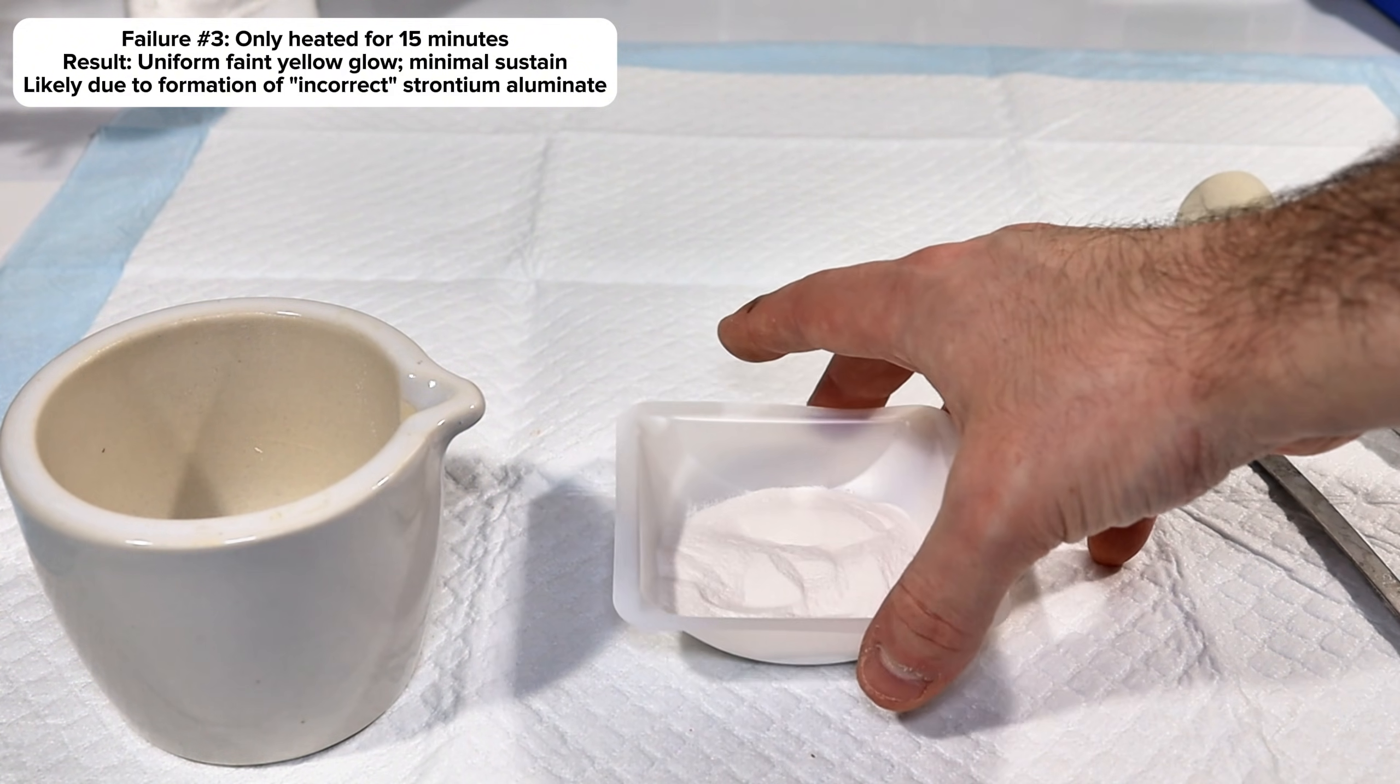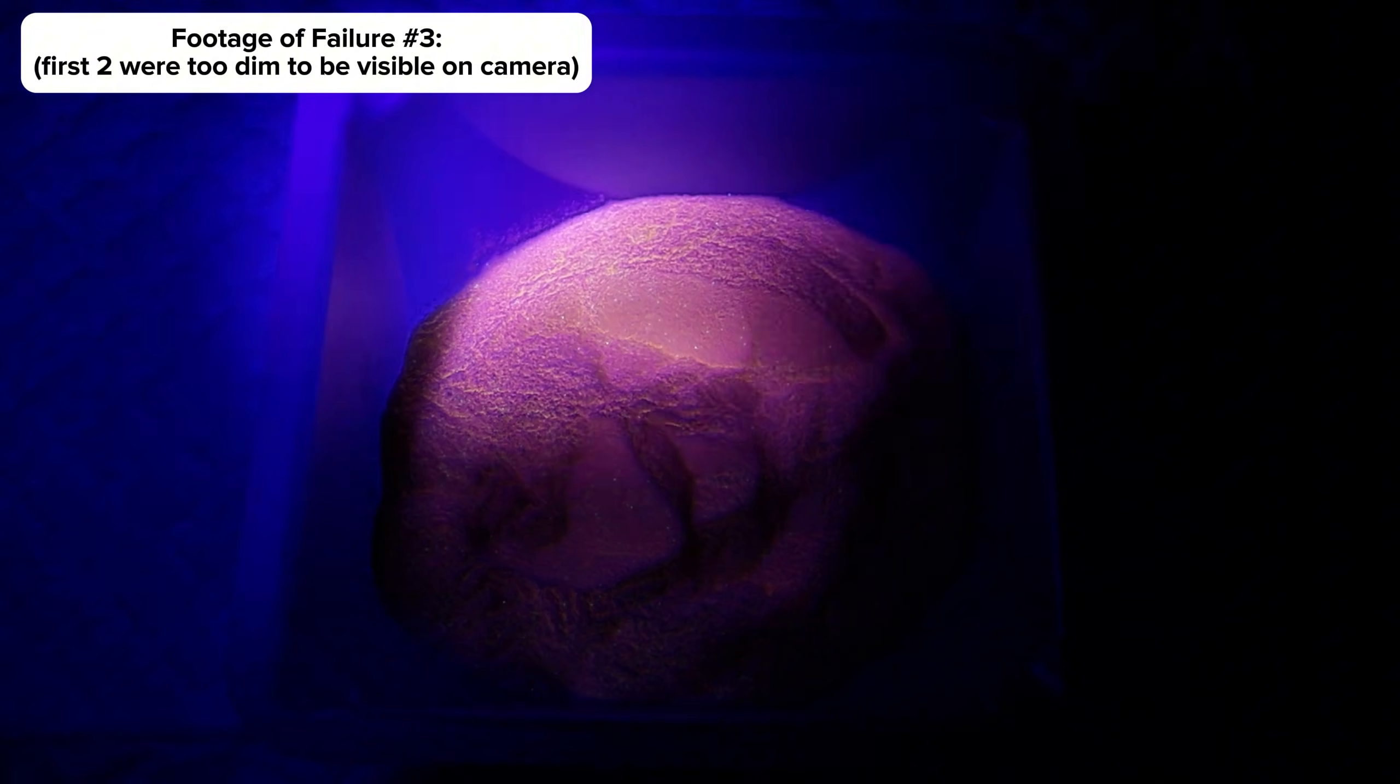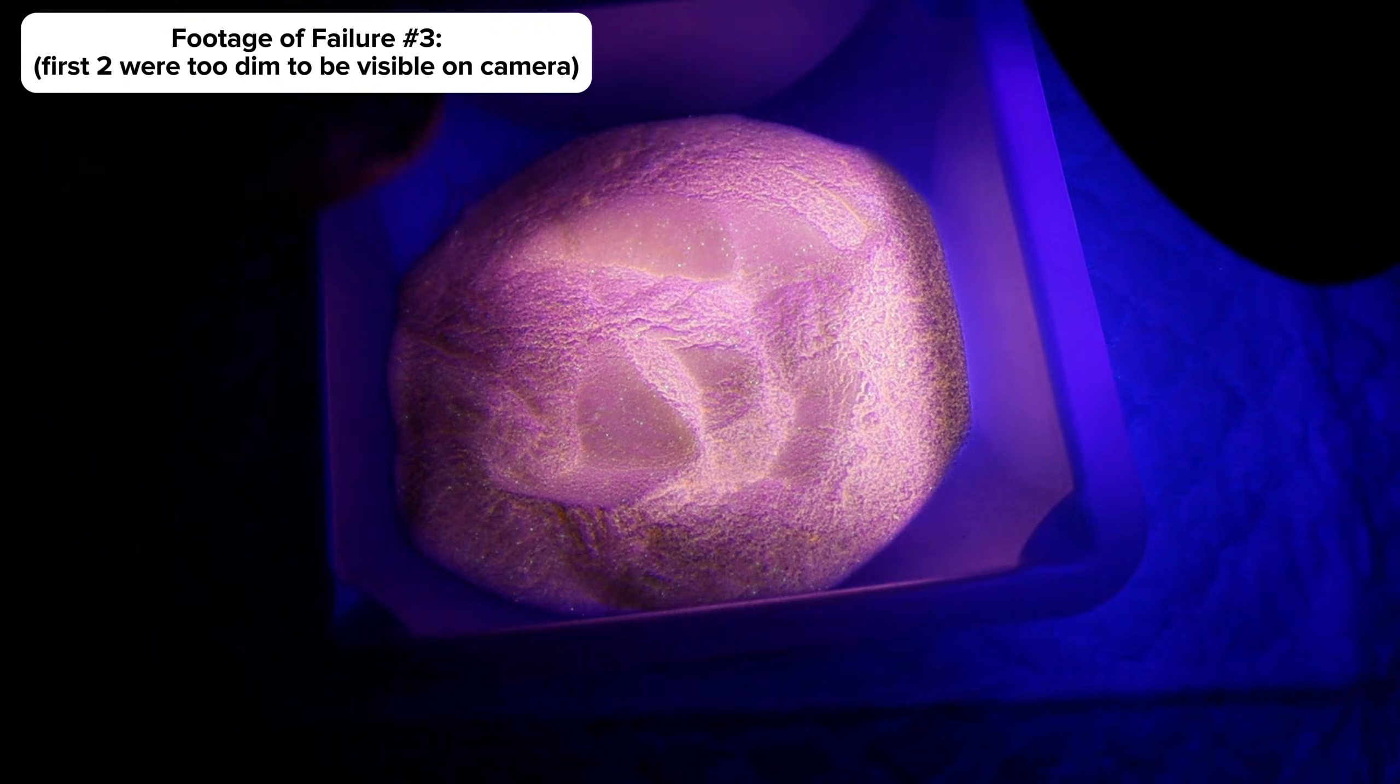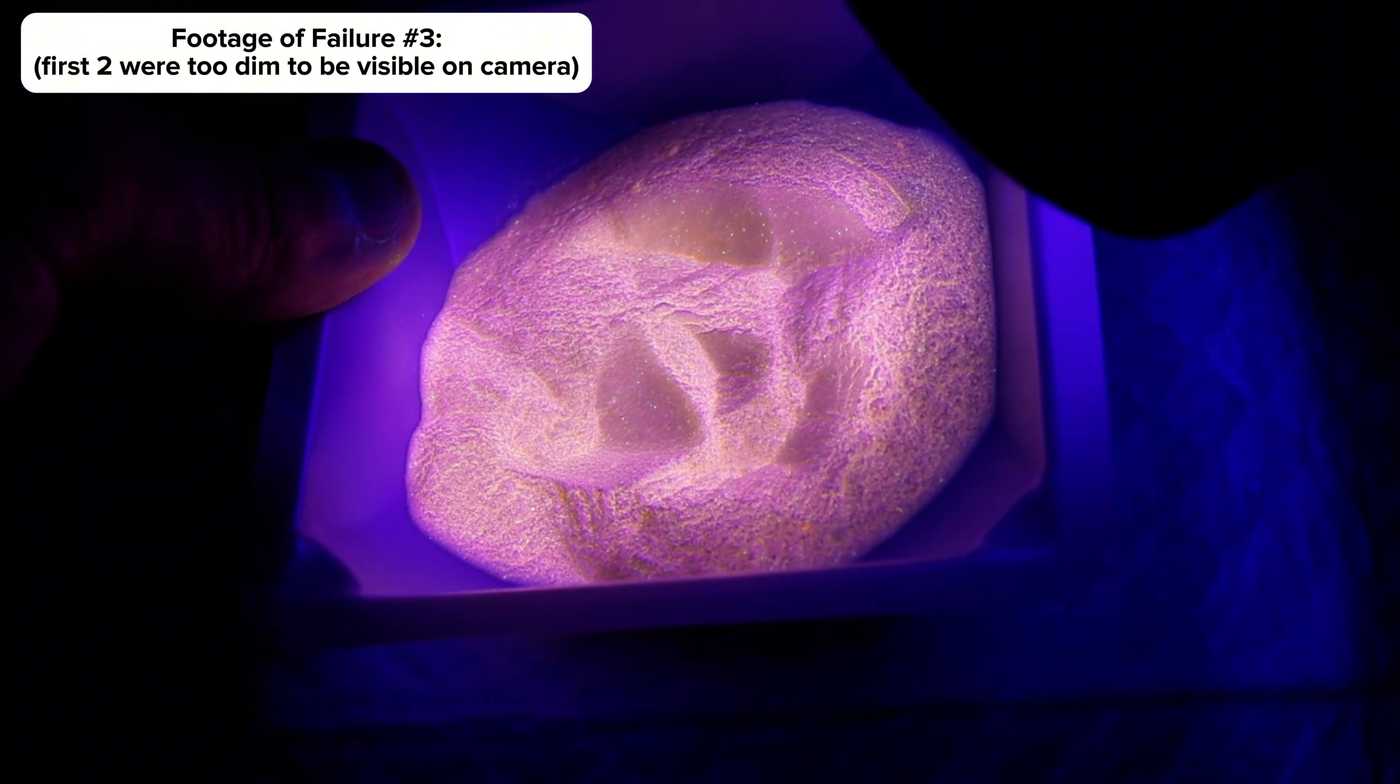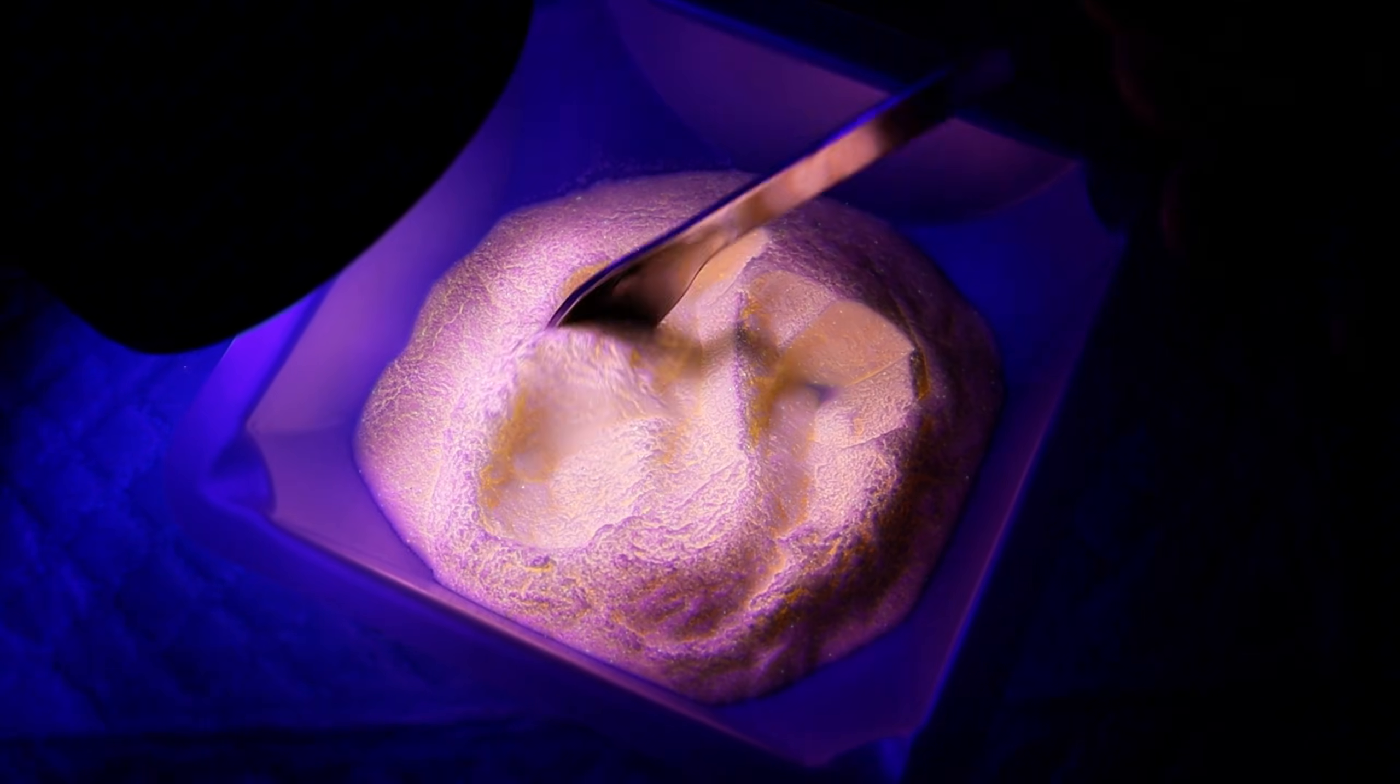This third batch produced the same faint yellow glow as the second, only completely uniform this time which I figured was at least something of an improvement. At first, I thought this was a problem with the new method, figuring that nitrate would almost certainly oxidize europium to its trivalent state, especially at such high temperatures. However, since the yellow color was unchanged from the second run conducted without the presence of any oxidizing agent, I figured it was more likely a problem with the reaction temperature.